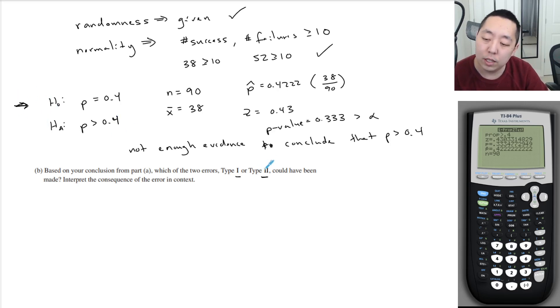But so the reality is that maybe this one really was true. And we made a mistake. We should have rejected it, but we did not reject it. Okay, that's what that means. This one is actually true.